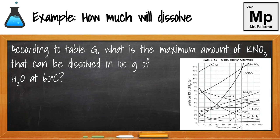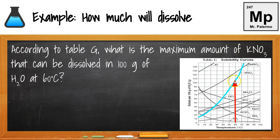Next example: according to Table G, what is the maximum amount of potassium nitrate (KNO3) that can be dissolved in 100 grams of water at 60°C? The maximum amount means we're looking at the saturation point — on the line. Locate 60°C, find the KNO3 line, go up to it, and read across. The saturation point is approximately 108 grams. So we can dissolve approximately 108 grams of KNO3 at 60°C. These are approximations, and you're given a range when answering.